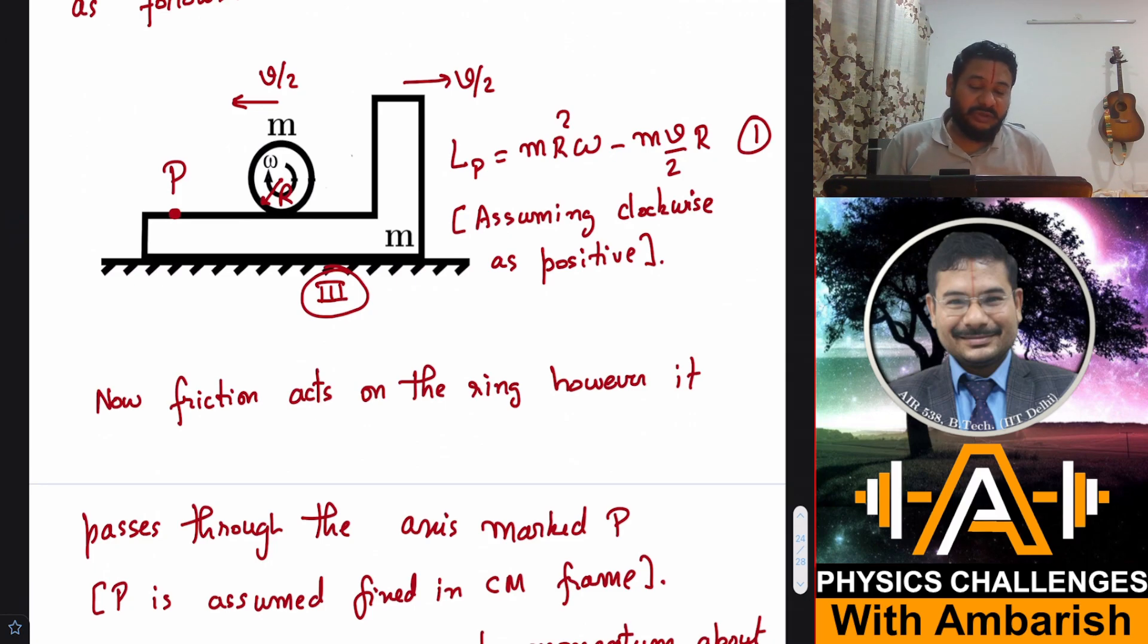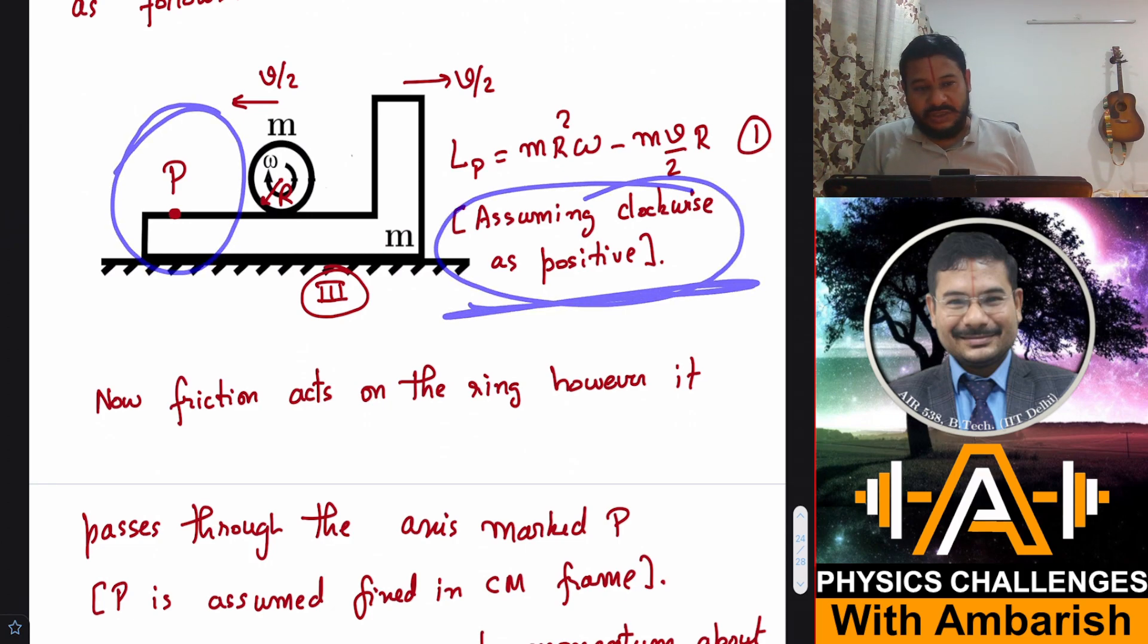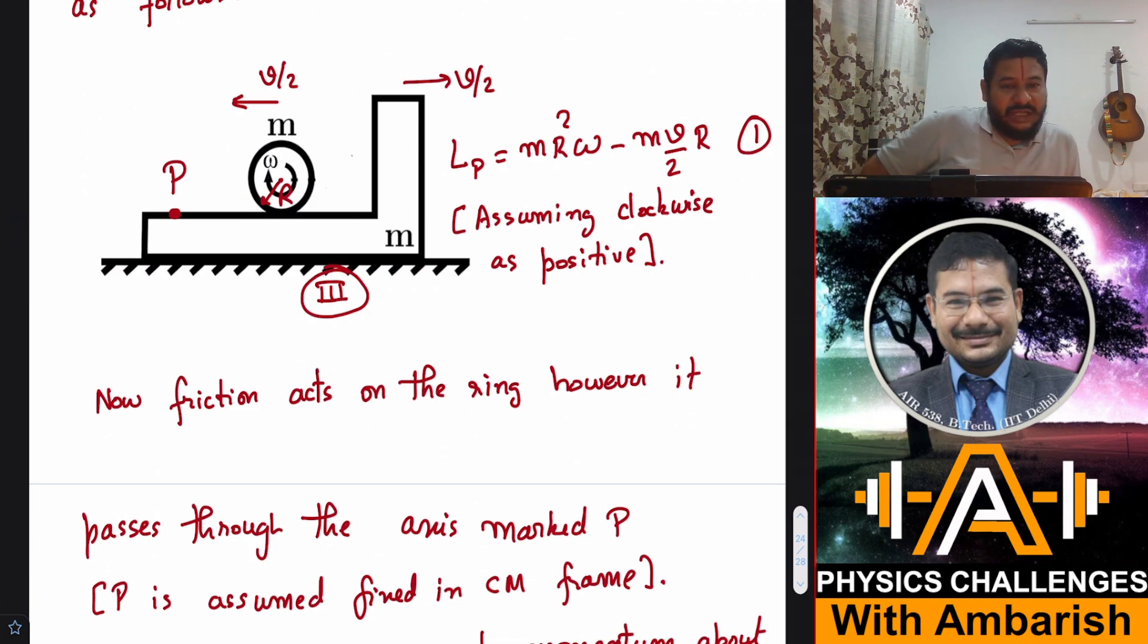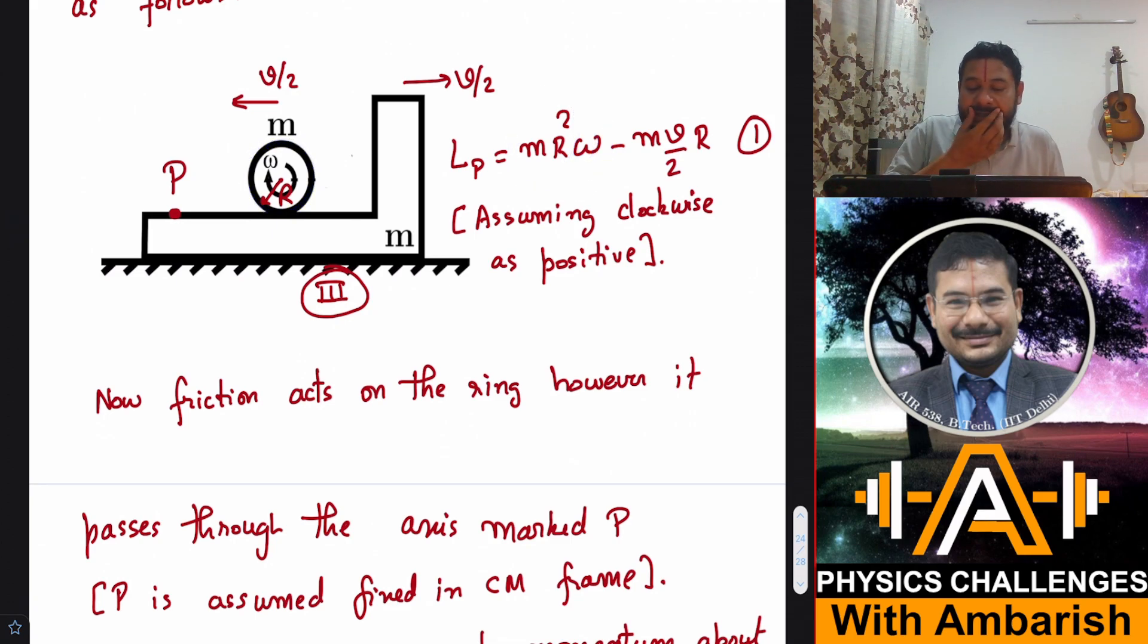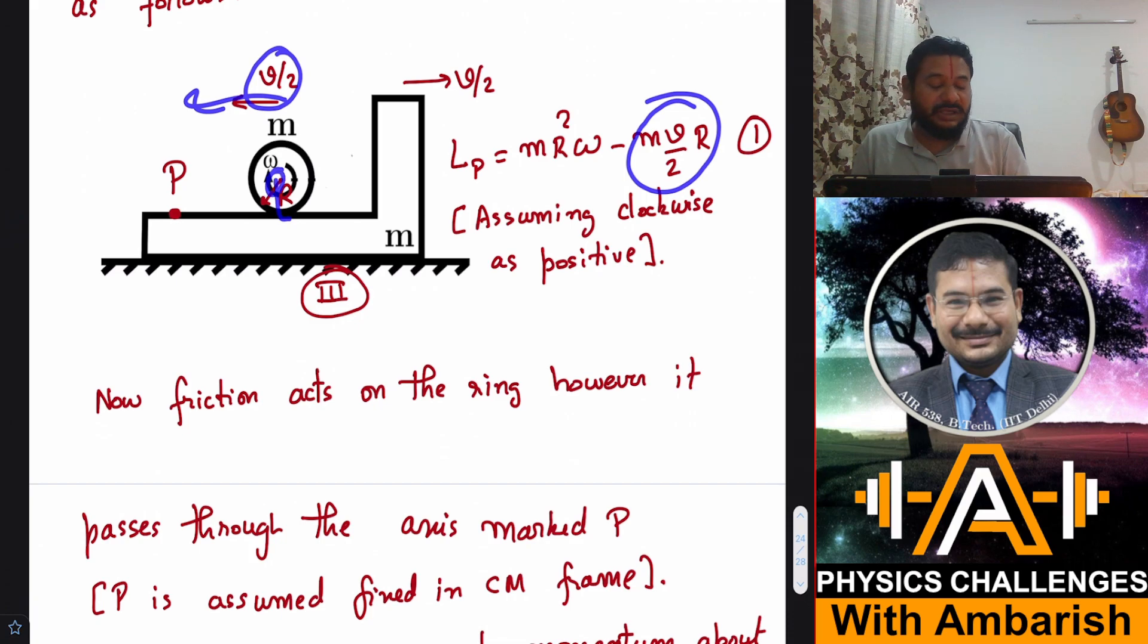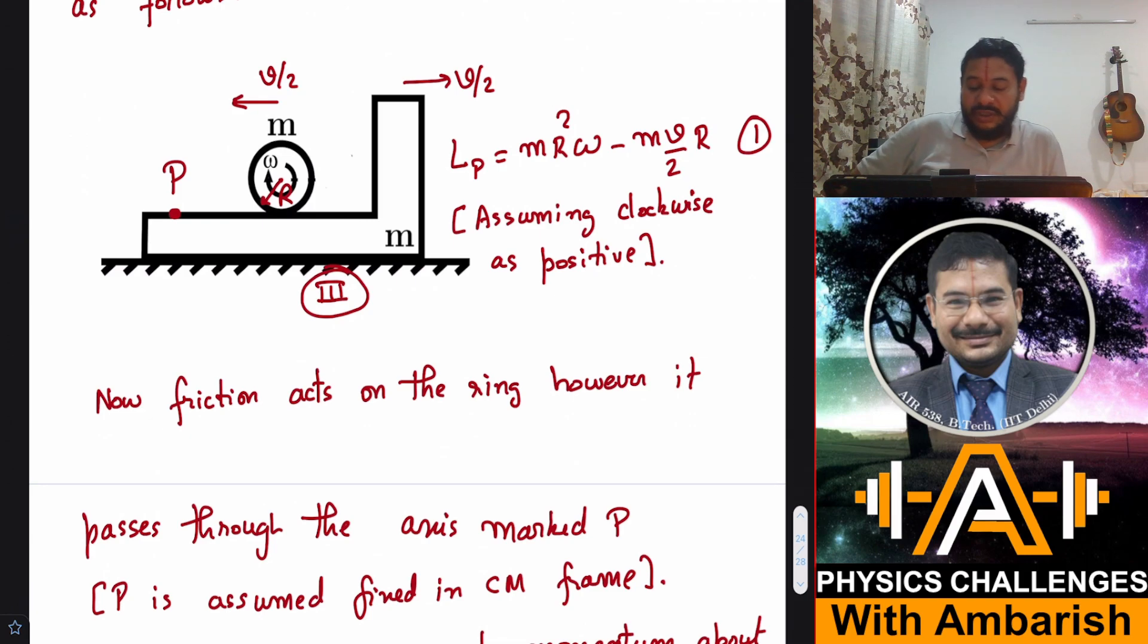Let's say P is some point which is fixed in center of mass frame, and I'm considering an axis passing through P going perpendicular to the page. What is the angular momentum if I assume clockwise direction as the positive direction? Angular momentum is m times r_cm times v_cm plus I_cm times ω. For a ring, I_cm is mR², so mR² times ω is the clockwise angular momentum due to the rotation part, and then minus m(v/2)R. This is going backward with v/2, and the perpendicular distance is R. This is our angular momentum with respect to point P just after the collision.